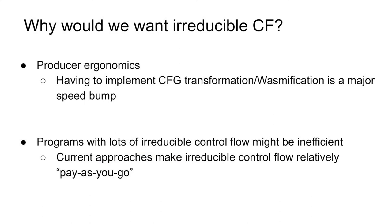Now that I've set up the state of the world, we can ask the question: why would we want to add irreducible control flow directly to WebAssembly? I think there are two main answers. First, from the producer ergonomics point of view — where we know in theory it's possible to transform any CFG to fit within WebAssembly — in practice this seems like quite a lot of work, and it might discourage language toolchains from investing in a WebAssembly backend. Second, from a user point of view, inserting these indirections does incur some runtime cost, although it's hard to precisely characterize how much of a practical issue this is. It's important to keep in perspective that the runtime inefficiencies amount to one additional indirection and conditional check per multi-entry loop iteration.